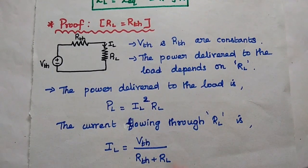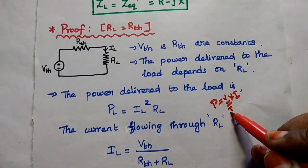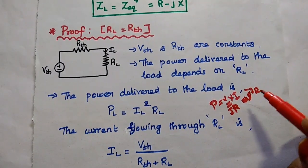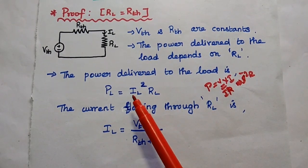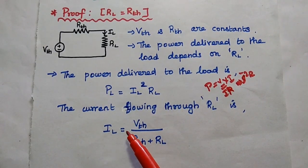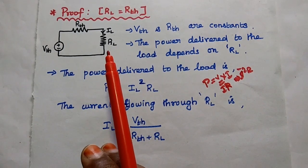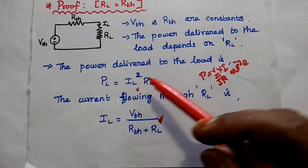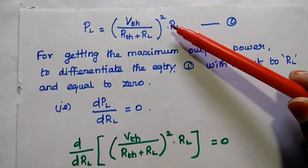The power delivered to the load formula is P = V × I, and since V = I × R, we get power equal to I² × R. Since we are talking about the load, we use PL = IL² × RL. The load current IL from the circuit is IL = VTH divided by (RTH + RL). Substituting this value gives us PL = [VTH / (RTH + RL)]² × RL. Consider this as the first equation.